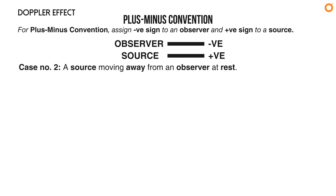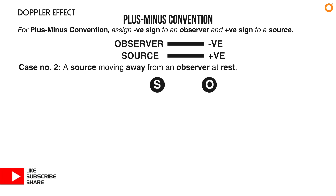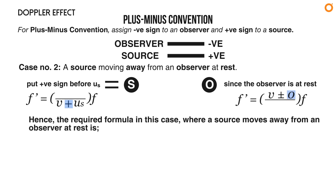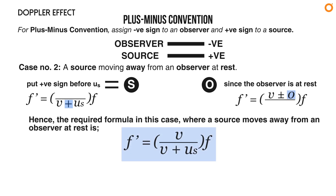Case number two: a source moving away from an observer at rest. The source moves away from the observer, so put a positive sign before uₛ. Since the observer is at rest, u₀ becomes zero. The required formula is: f prime equals to v divided by (v plus uₛ) times f.